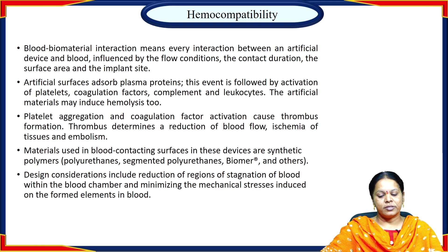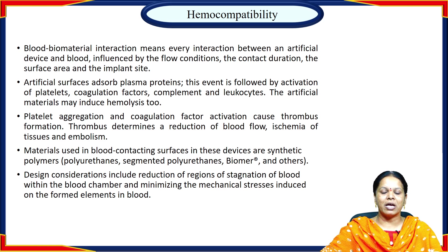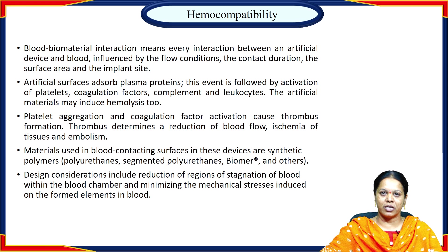Materials used for blood-contacting surfaces are basically polymers, because polymers are highly biocompatible and can easily accommodate the texture and soft tissue requirements compared to blood vessels. Major materials used for blood-contacting surfaces that are highly blood compatible are polyurethanes and segmented polyurethanes. Design considerations include reduction of blood stagnation — whenever there is stagnation of blood, there is a maximum chance of platelet adhesion and thereby thrombus formation. We must ensure that because of the implantation of the biomaterial, there is no accumulation of blood at a single site and blood should be flowing smoothly.